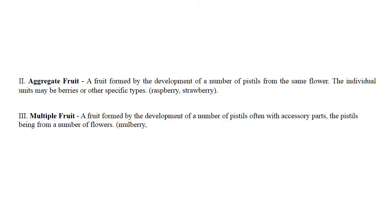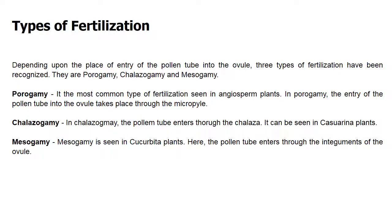Multiple fruit means a fruit formed by developing a number of pistils, often with accessory parts, the pistils being from a number of flowers — for example, mulberry. Coming to different types of fertilization — three kinds: porogamy, chalazogamy, and mesogamy. Porogamy means fertilization seen in angiosperms where entry of the pollen tube into the ovule takes place through the micropyle. Chalazogamy means the tube enters through the chalazal opening. Mesogamy, seen in cucurbit plants, means the pollen tube enters through the integuments of the ovule.